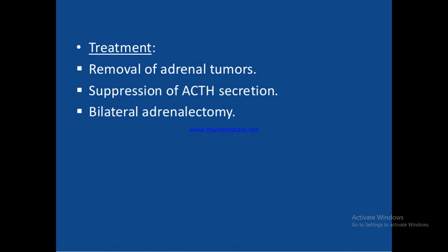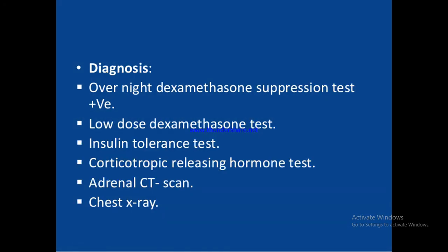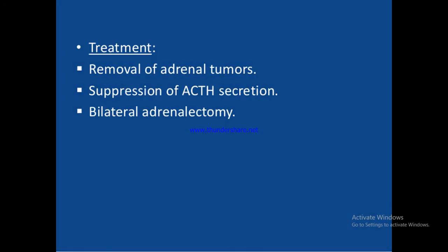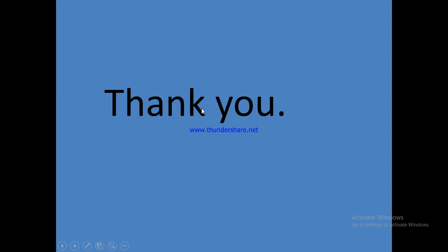These two conditions represent opposite extremes of glucocorticoid production: increased production is known as Cushing syndrome, and reduced production is known as Addison's disease. Treatment of Cushing syndrome involves removal of adrenal tumors, suppression of ACTH secretion from the pituitary, or bilateral adrenalectomy. Treatment of Addison's disease involves providing the required hormones to the body to maintain the patient's life.